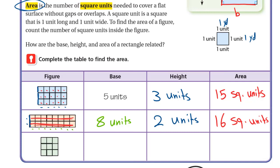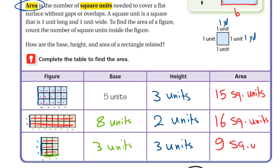For the third figure, if this is the base, it has 3 units. And the height will be perpendicular to it — this will be the height, which also has 3 units. And the area — the number of squares inside — we have three, six, nine: 9 square units.